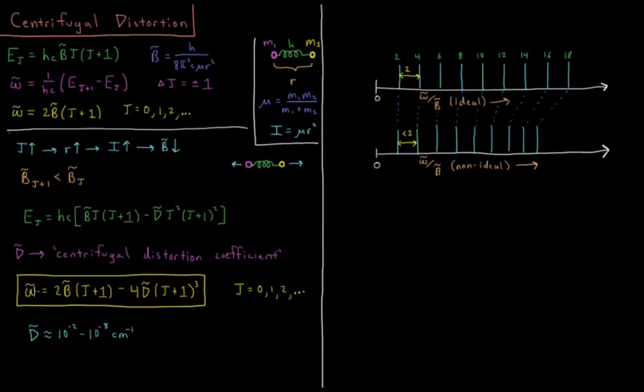So omega bar, the difference between two subsequent energy levels when we have this model for our energy, ends up being, if you do the same kind of derivation we did above, 2 B bar J plus 1, the same term as before, minus the extra term 4 D bar times J plus 1 cubed. And J can still start at zero and go up from there as an integer.